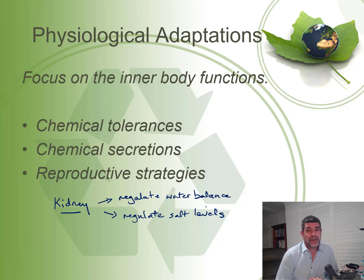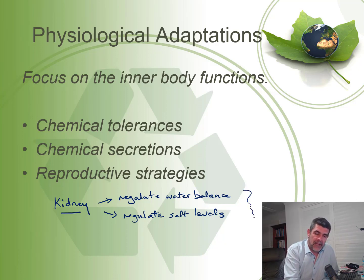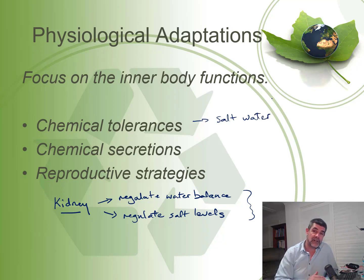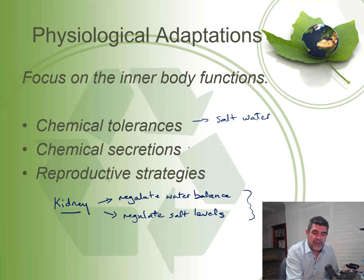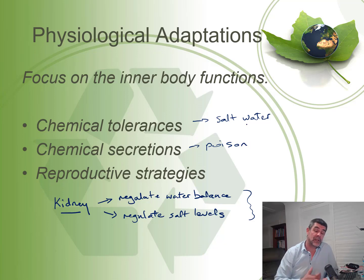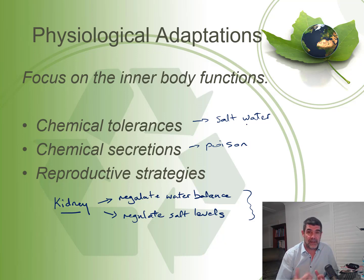So while a kidney might be a structure, the way that the kidney functions makes it a physiological adaptation. Chemical tolerances may relate to salt levels — there are many organisms that prefer freshwater, saltwater, or sometimes changing environments. Chemical secretions may include things like the production of poisons. There are certain organisms, both plants and animals, that are poisonous, and that's a great protection mechanism against being eaten.